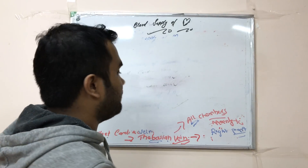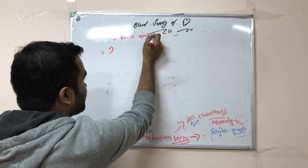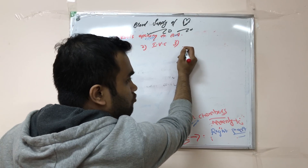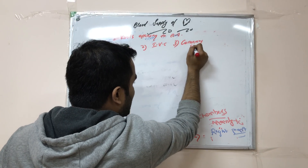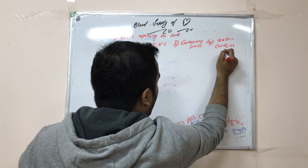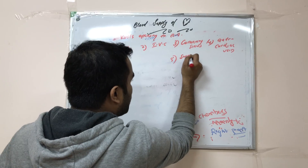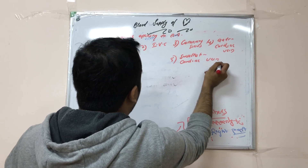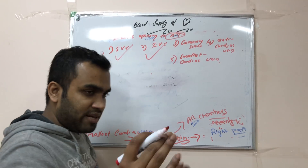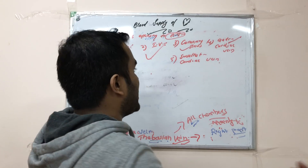An important MCQ: what are the structures opening into the right atrium? First, the superior vena cava; second, the inferior vena cava; third, the coronary sinus, which is located in the right atrium and collects blood from its tributaries; fourth, the anterior cardiac vein, which directly opens into the right atrium; and fifth, the smallest cardiac vein, also known as the Thebesian vein, which also opens into the right atrium.